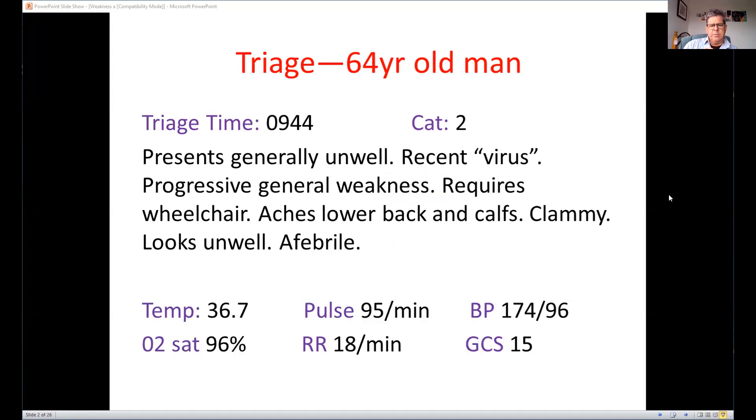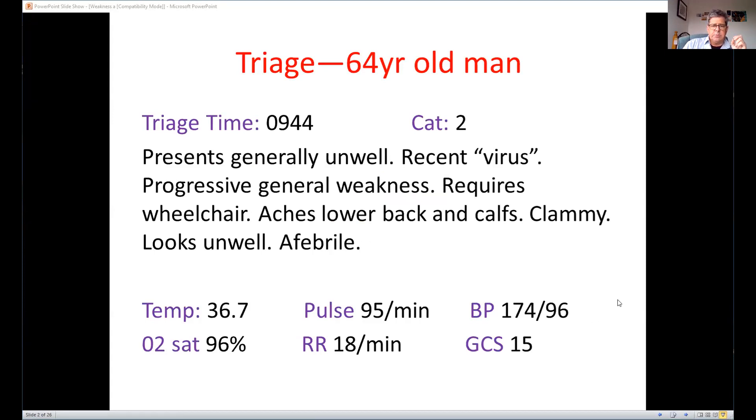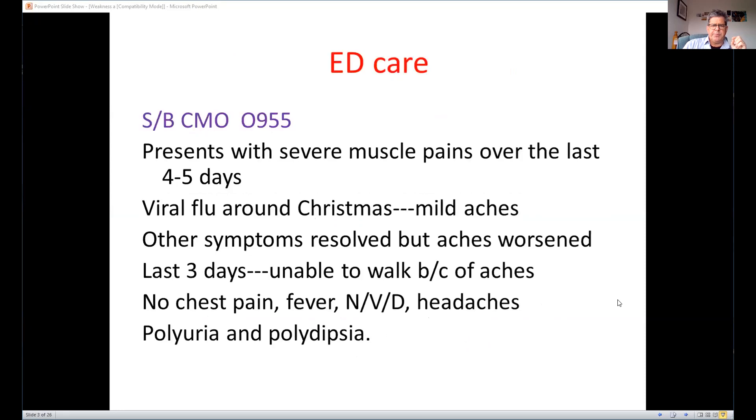He looks unwell but his numbers at triage aren't too bad. He's got some hypertension, desaturation, GCS, he's afebrile. There's nothing else much to find but they put him into the resource room where he's seen by the CMO and he said look he's had muscle pains for four or five days, had that recent viral infection. For the last couple of days he really can't walk at all. No fever, no rash, no paraparesis, no weakness, no numbness, nothing like that. He does notice he's got some polyuria and polydipsia.